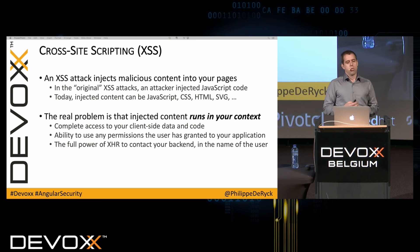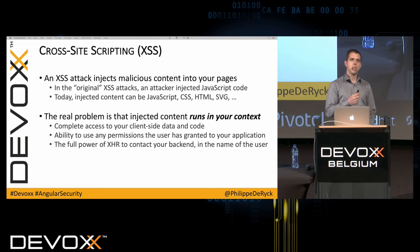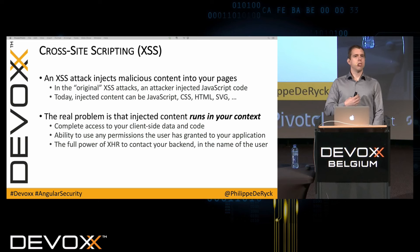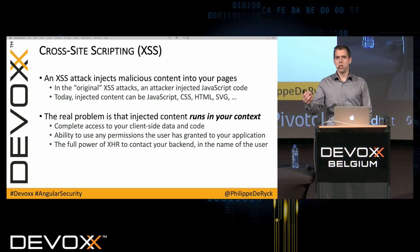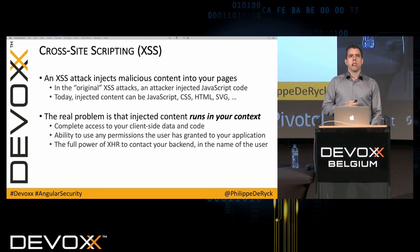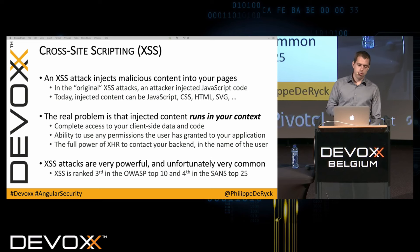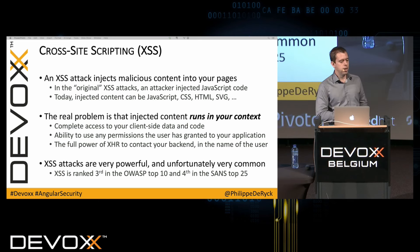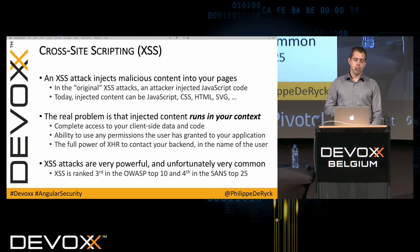The real danger of cross-site scripting is that whenever someone manages to execute injected code, that code runs in your context — in the user's browser. It can do whatever it wants within that context: read cookies, access local storage, use granted permissions like geolocation, execute requests to your backend, and impersonate the user. That is why cross-site scripting is considered so dangerous. It's ranked third in the OWASP Top 10.